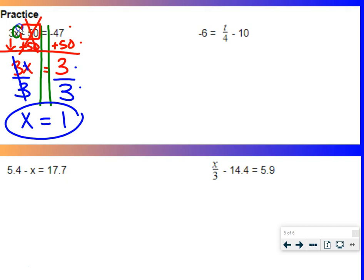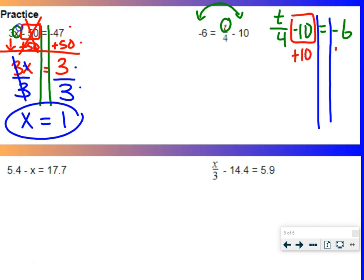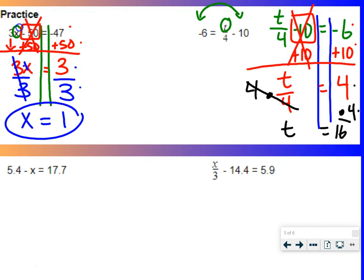Next example. We have negative 6 equals t divided by 4 minus 10. Find your variable. It's right there. If you don't like it on that side of the equation, let's rewrite it. All we do is flip the sides. Flip around that equal sign. Draw your railroad track. Undo addition and subtraction. We have minus 10. So we need to undo that with a plus 10 on both sides. 10's cancel each other out. We bring down the t divided by 4 equals negative 6 plus 10 is 4. Last step, undo that division with multiplication. So we're going to multiply both sides by 4. 4's cross each other off. We get t equals 4 times 4, which is 16.